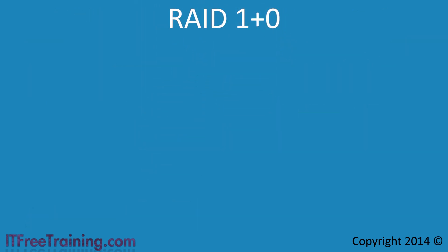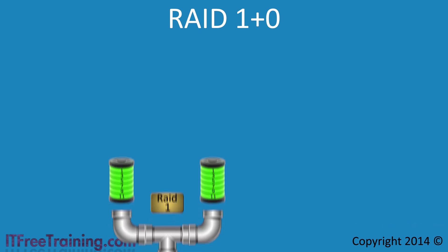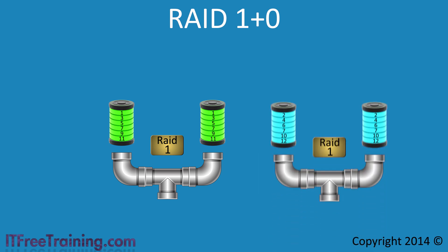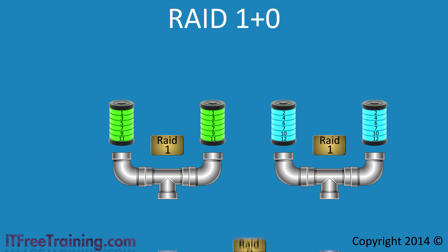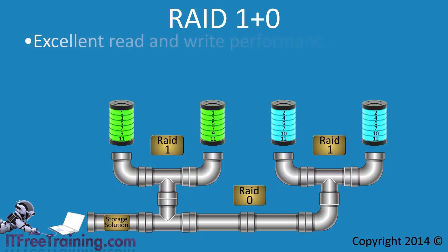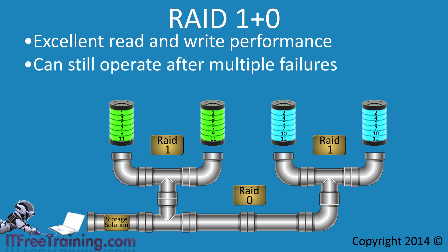To address these issues, RAID 1 plus 0 was developed, sometimes referred to as RAID 10. RAID levels that combine two RAID levels together are referred to as nested RAID. The first RAID level is RAID 1, which mirrors data across drives offering redundancy but no performance increase. To offer a performance increase, a second RAID 1 array is added which is striped with the first using RAID 0. When data is written to the RAID, it is divided in two — half the data is written on the left and the other half on the right. This offers excellent read and write performance. With the cost of storage decreasing, RAID 1 plus 0 has become more popular in business.